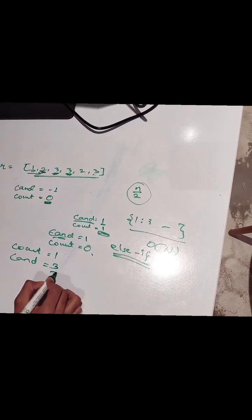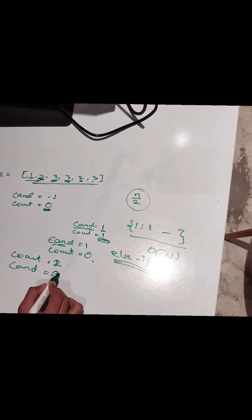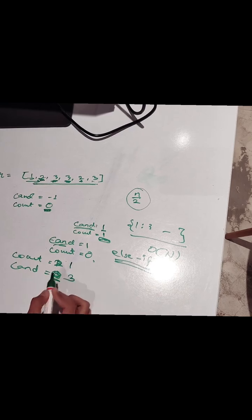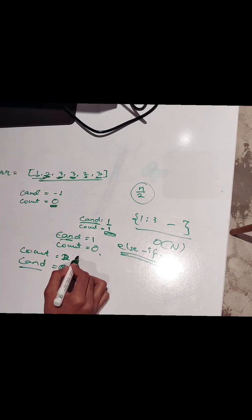So in next turn again 3 3 matching, so count will become 2. Again that is 2, so this count will become 1 and still candidate is 3. So when we will come here again 3 3, so it will become 2.